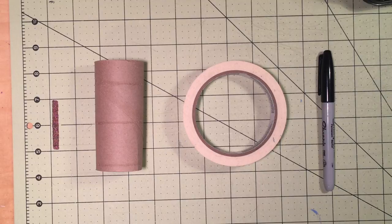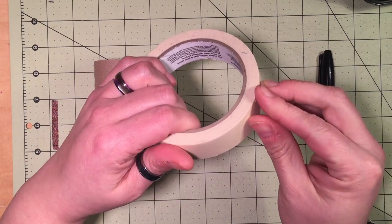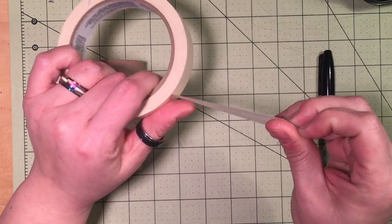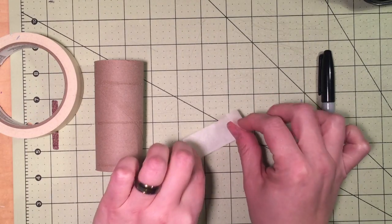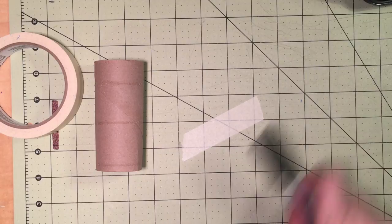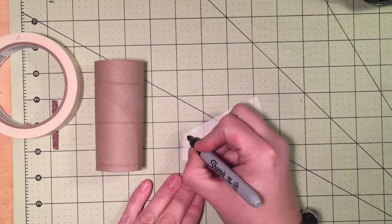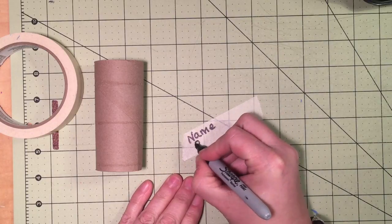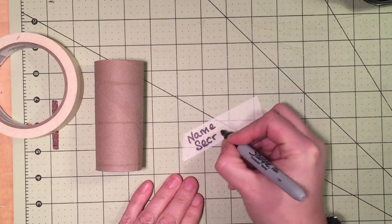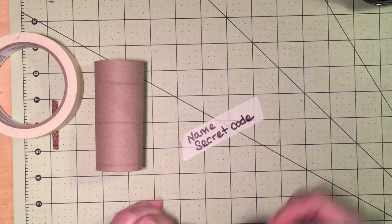The first thing we're going to do is take some masking tape, and on that masking tape, so that we know who this cat belongs to, we are going to write our name and secret code. If you're one of my students, you know your secret code. We're going to do that with a sharpie marker so that way it does not smear off.